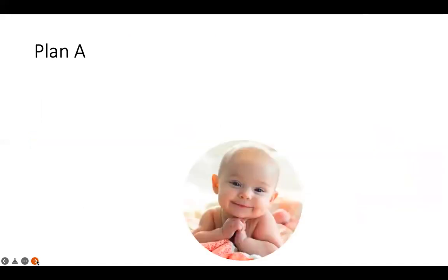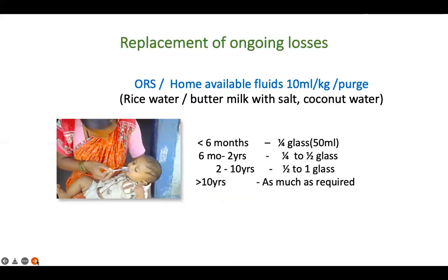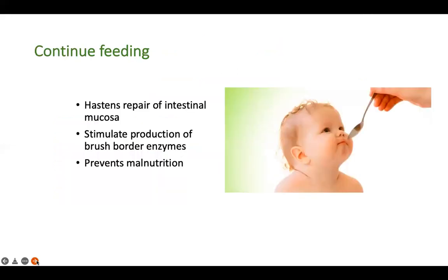How do you manage a child with no dehydration? It is Plan A, which has three components: replacement of ongoing loss, continued feeding, and explaining dangerous signs to bystanders. Ongoing loss can be replaced using ORS or home-available fluids at 10 ml per kg per purge. Give this using a spoon, or small sips for a bigger child. Never use a bottle for rehydration — bottle feeding is a common cause of diarrhea.